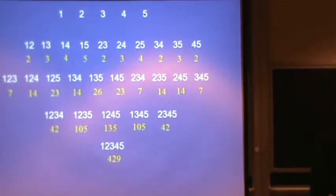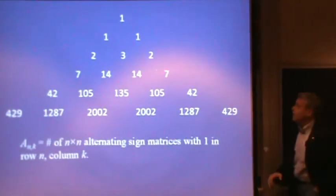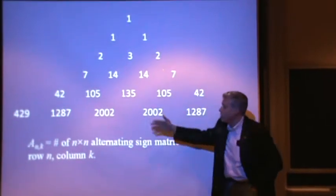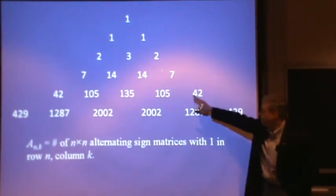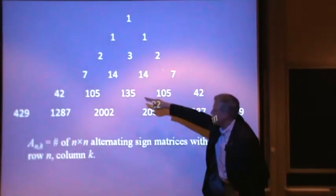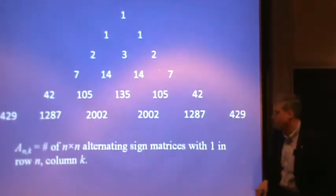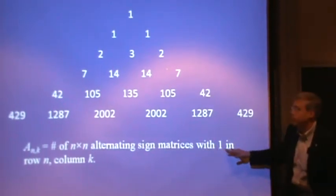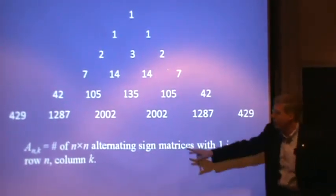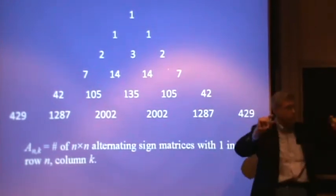This is a simple sequence, and this just shows you the first few rows that you get. The numbers we're counting here in the nth row, the kth term across, is the number of n by n alternating sign matrices with a one in row n column k.